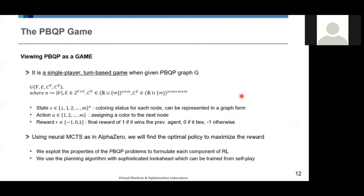To summarize, we can view the PBQP as a single-player turn-based game by defining its state, action, and rewards. So we can apply the same mechanism used in AlphaZero, which was reported very effective to solve complex problems like the game of Go, chess, and shogi. We use the planning algorithm called MCTS, as in AlphaZero, which can be trained from numerous self-plays.